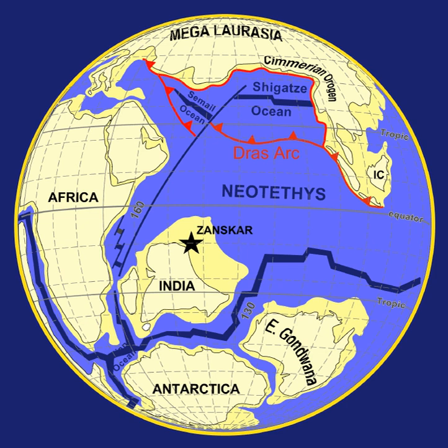The Paleozoic spanned from roughly 541 to 252 million years ago and is subdivided into six geologic periods: from oldest to youngest they are the Cambrian, Ordovician, Silurian, Devonian, Carboniferous and Permian. Geologically, the Paleozoic starts shortly after the breakup of a supercontinent called Pannotia and at the end of a global ice age. Throughout the early Paleozoic, the Earth's landmass was broken up into a substantial number of relatively small continents. Toward the end of the era, the continents gathered together into a supercontinent called Pangaea, which included most of the Earth's land area.